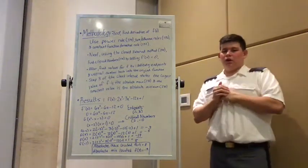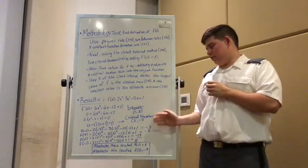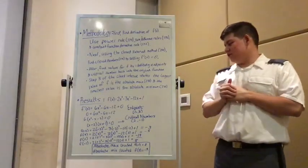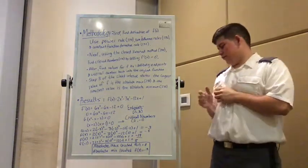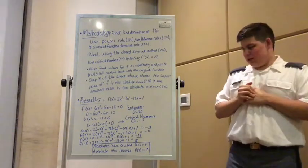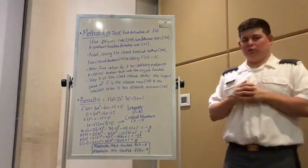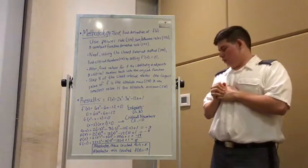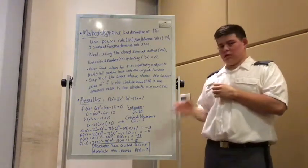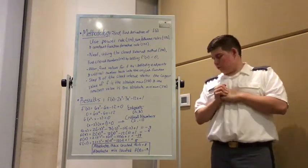Then we plug our endpoints and our critical numbers into the original function. Now we have f of negative 2 equals negative 3, f of 3 equals negative 8, f of 2 equals negative 19, and f of negative 1 equals 8. So our absolute max for this interval is located at f of negative 1, which is equal to 8, and our absolute min located at f of 2 equals negative 19.